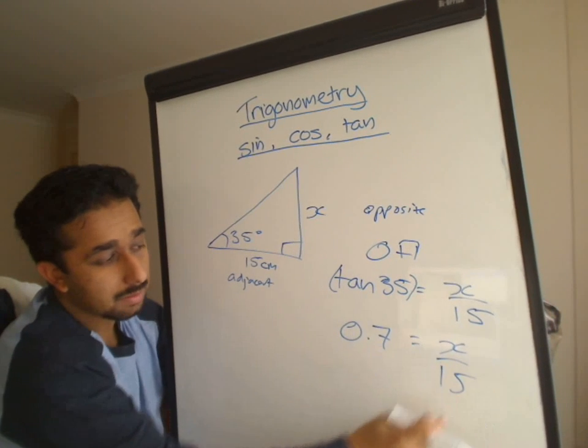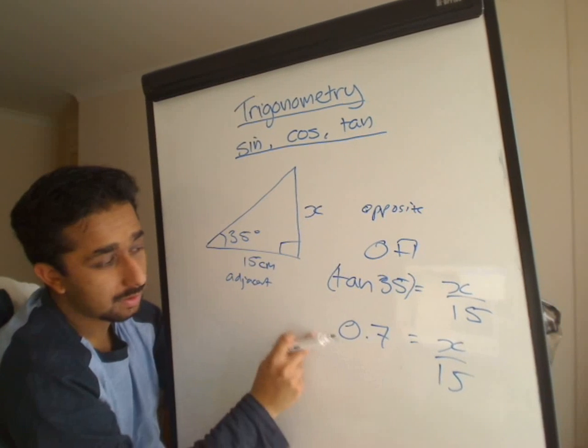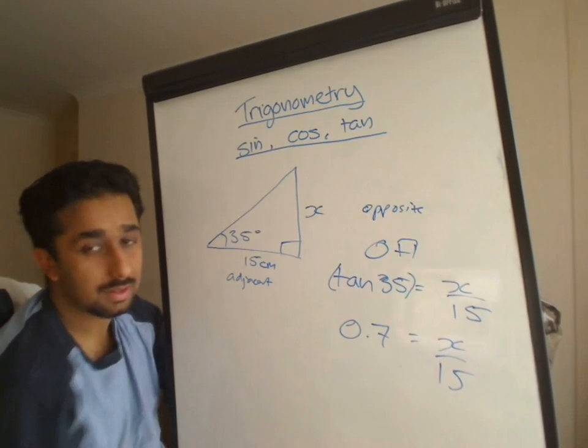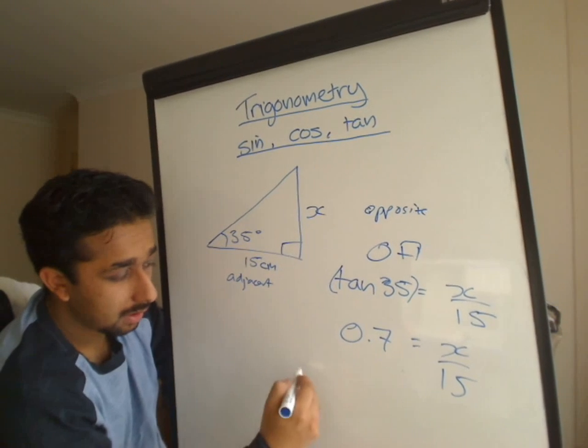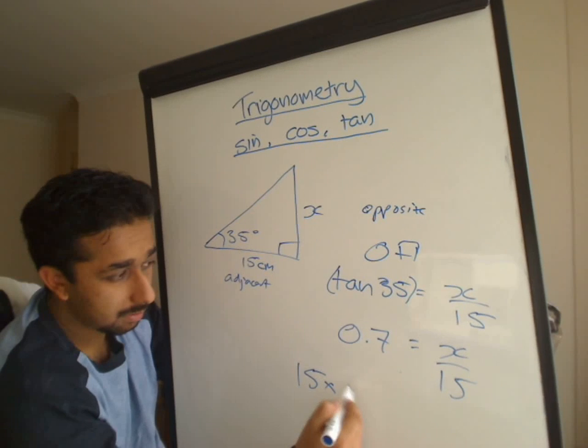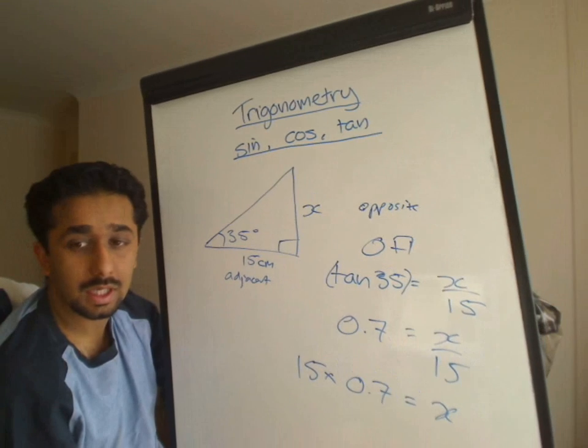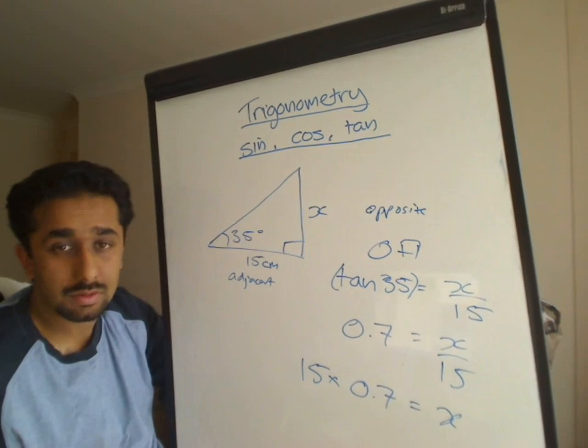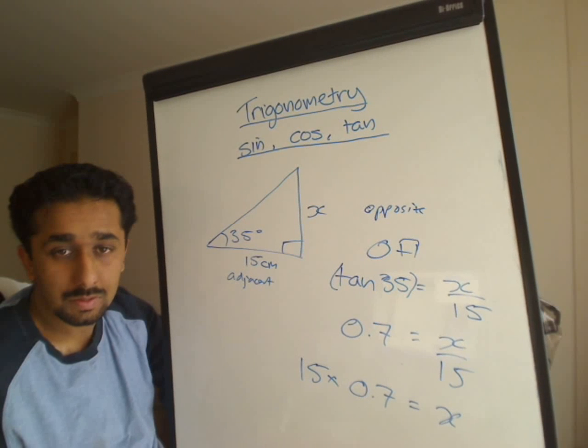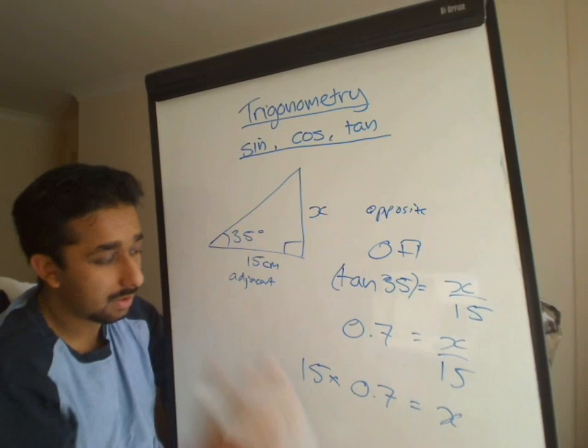If that's divided by 15 on this side of the equals, when I move it to this side here, it will become a times. If you don't know that already, that's another topic you have to learn separately. It's nothing to do with trigonometry. So basically, that's what you get. And what is 15 times 0.7? What do I get? 10.5.